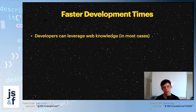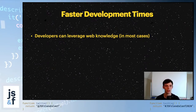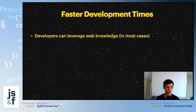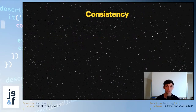Faster development times — you can use your web knowledge, so startup time is reduced. If you bring a new developer onto the team and need them in the mobile app space, using a hybrid or cross-platform framework means they'll have ramp-up time, but it won't be nearly as long or steep a learning curve as trying to do Swift, Java, Kotlin, or Objective-C. You're going to have reduced training time and consistency.